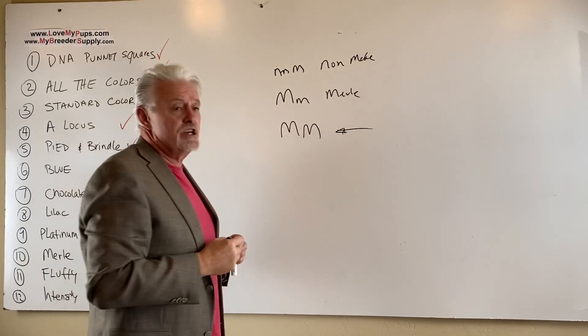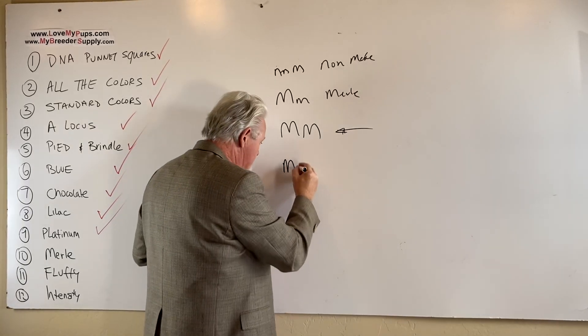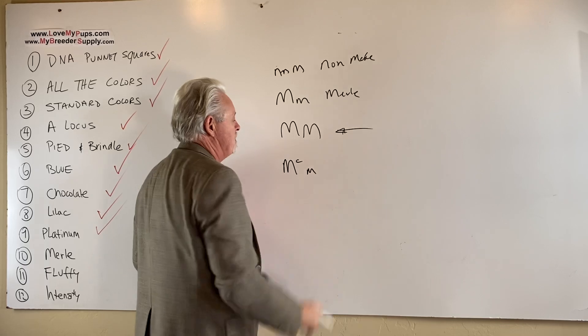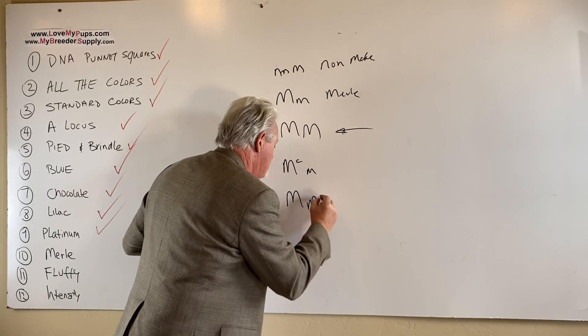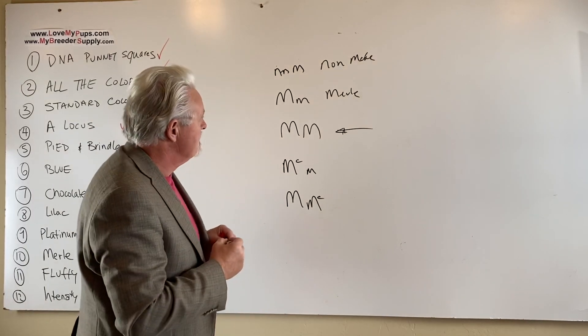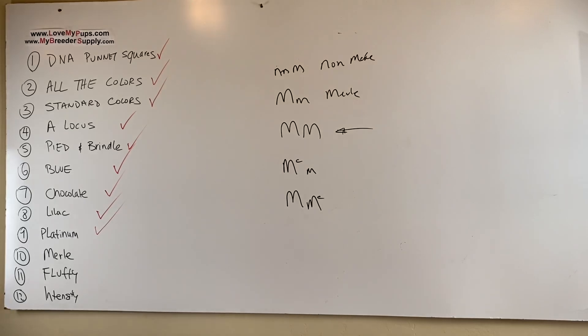So for this reason, you don't breed Merles to Merles. There is one last one, it's called MC, Cryptic Merle. So you might come back with that. Or you might even come back with a copy of Merle and a copy of Cryptic Merle. So that's what you're going to see on a report. So now the question is, now what's the good, the bad and the ugly?